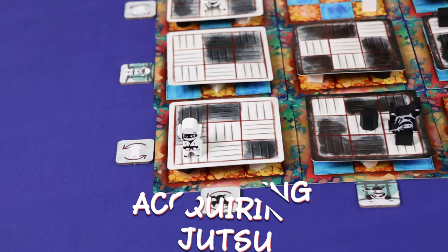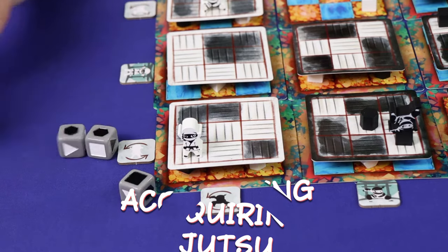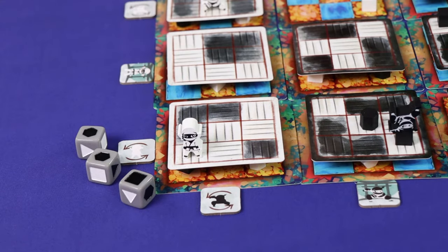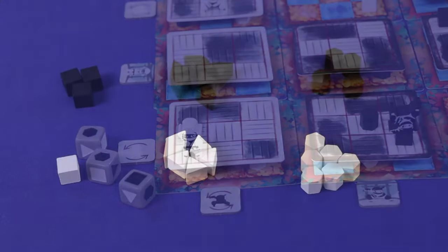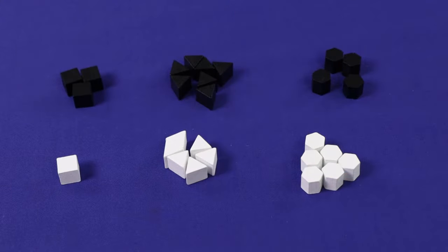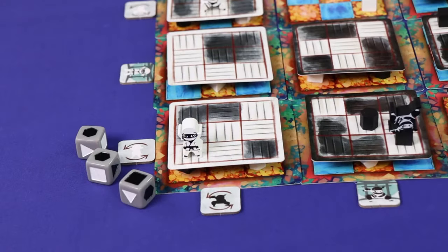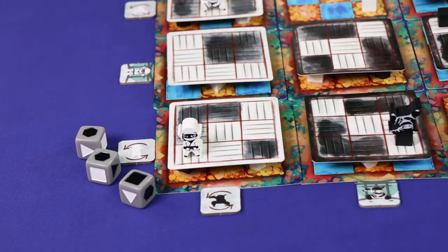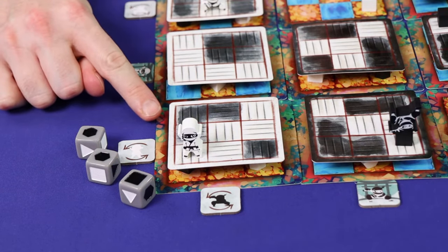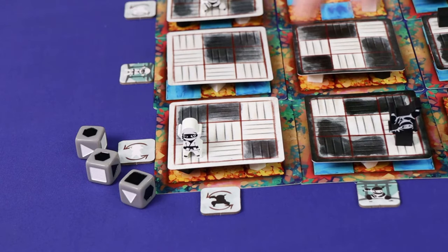The first step of any turn is to roll the three jutsu dice, and then you must take jutsu matching those dice into your supply. You can take this jutsu from three places: the general supply, from on top of a floorboard, unless it has a ninja standing on it, or from underneath a floorboard.